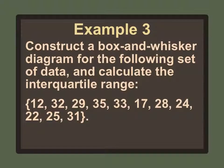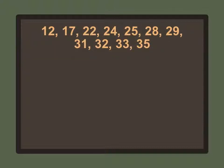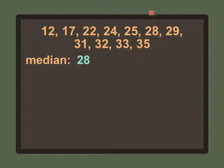Let's do another example — a box and whisker diagram for a new data set, and we'll also calculate the interquartile range. We put the data in order and notice there are 11 numbers, so it's odd. Since it's odd, the median is the number right in the middle, which is 28. When calculating the lower and upper quartiles, we do not include 28 because it's the median.